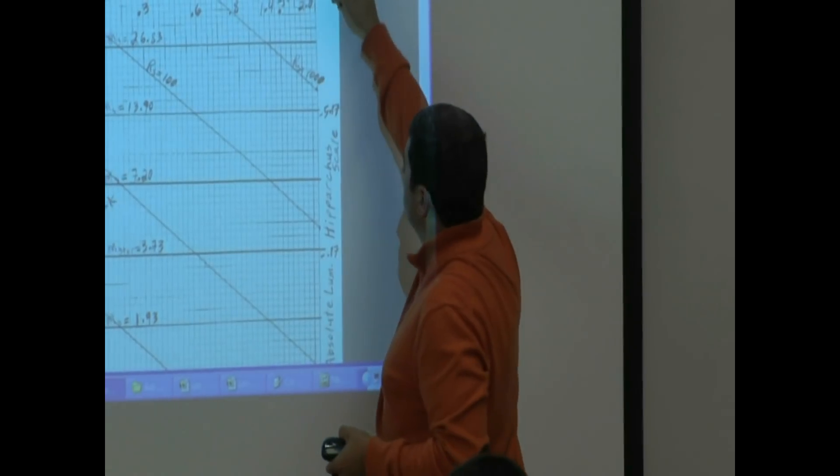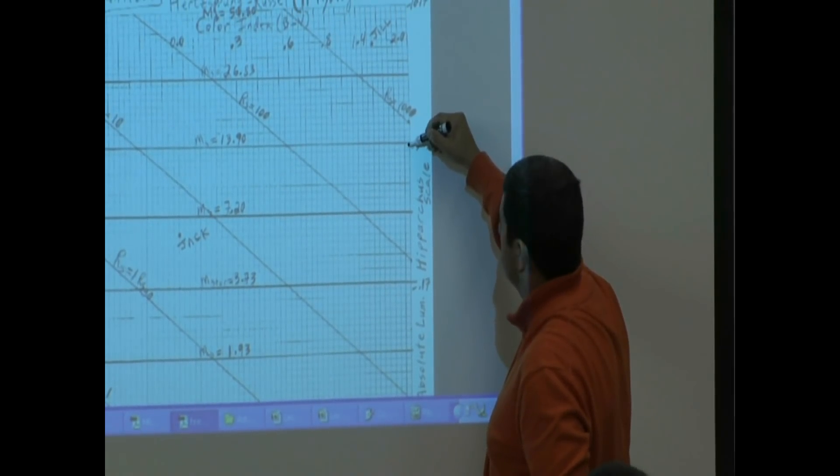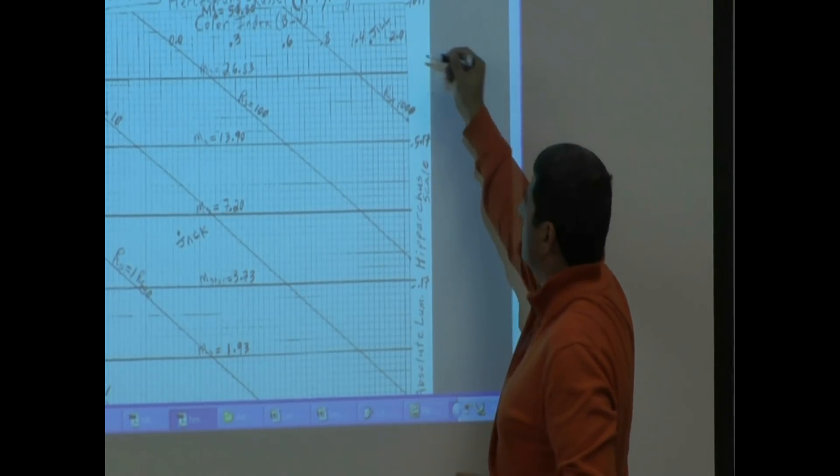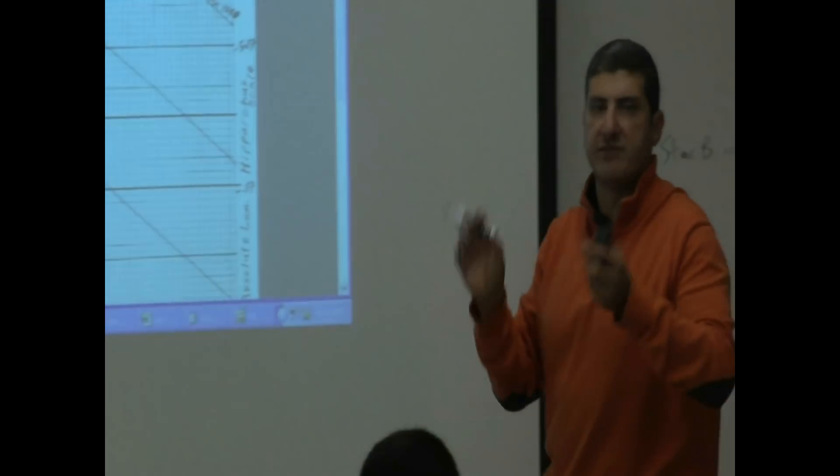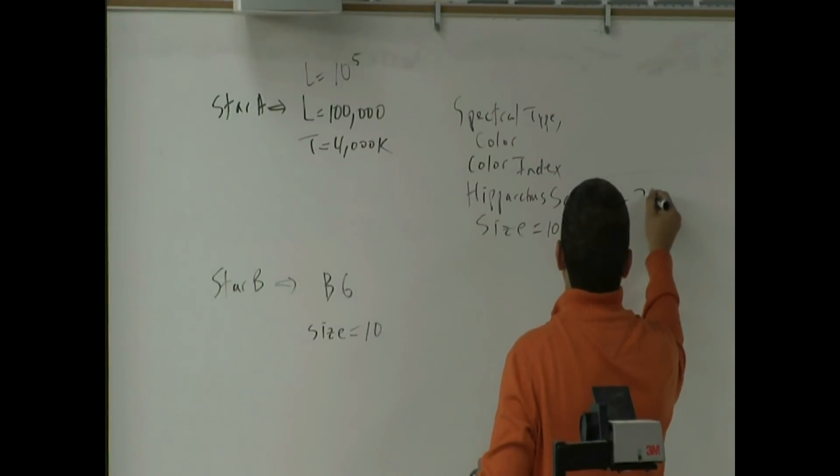It's not going to be exactly between because the Hipparchus scale is a logarithmic scale. For every unit of a hundred, there's a unit of five. This is a star that's ten thousand times brighter, a star that's a million times brighter. So this is more likely to be around negative seven. Approximately negative seven.